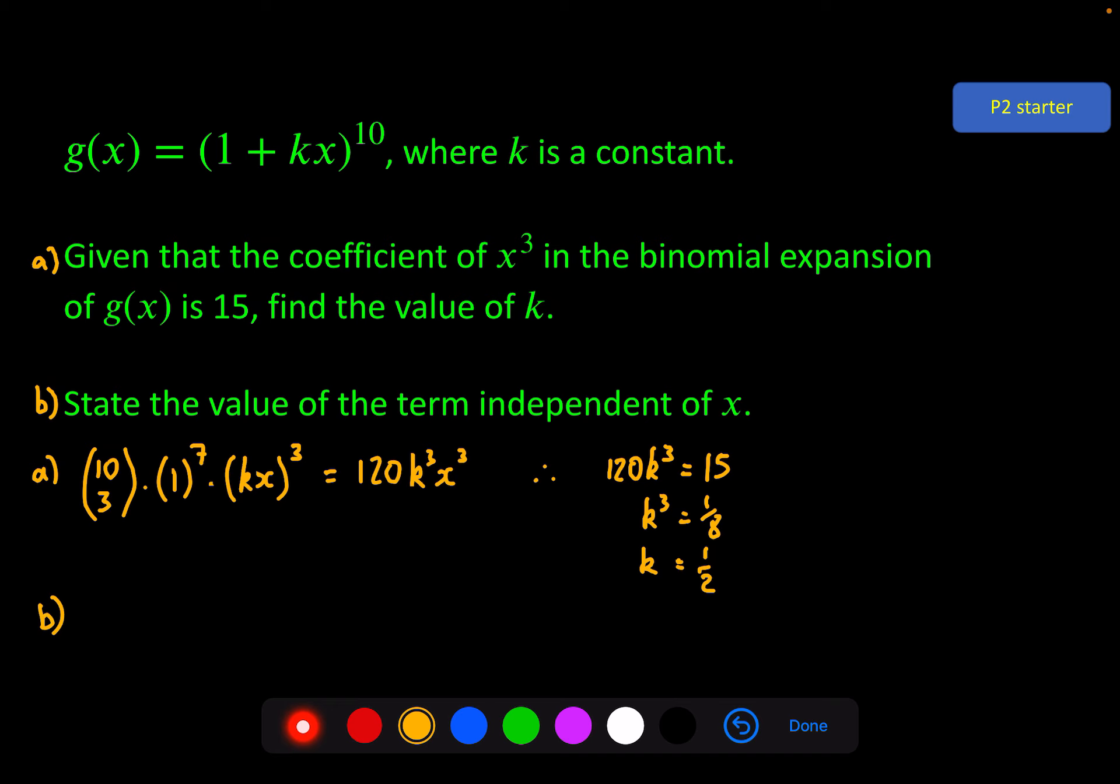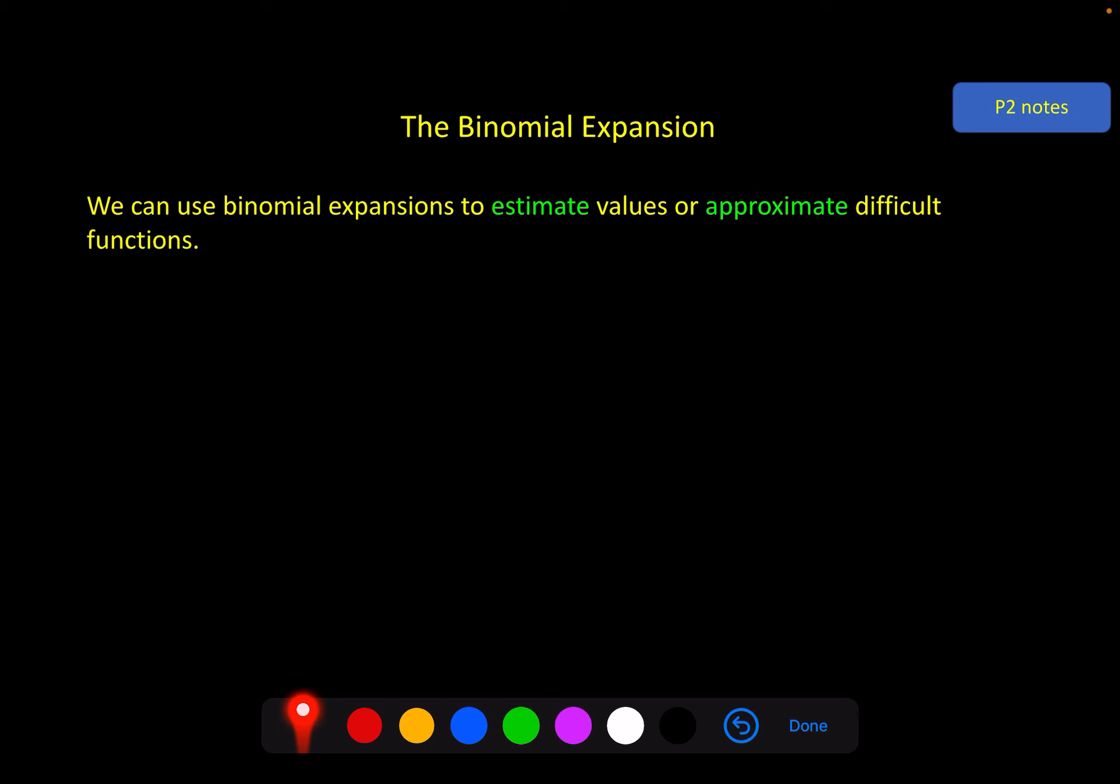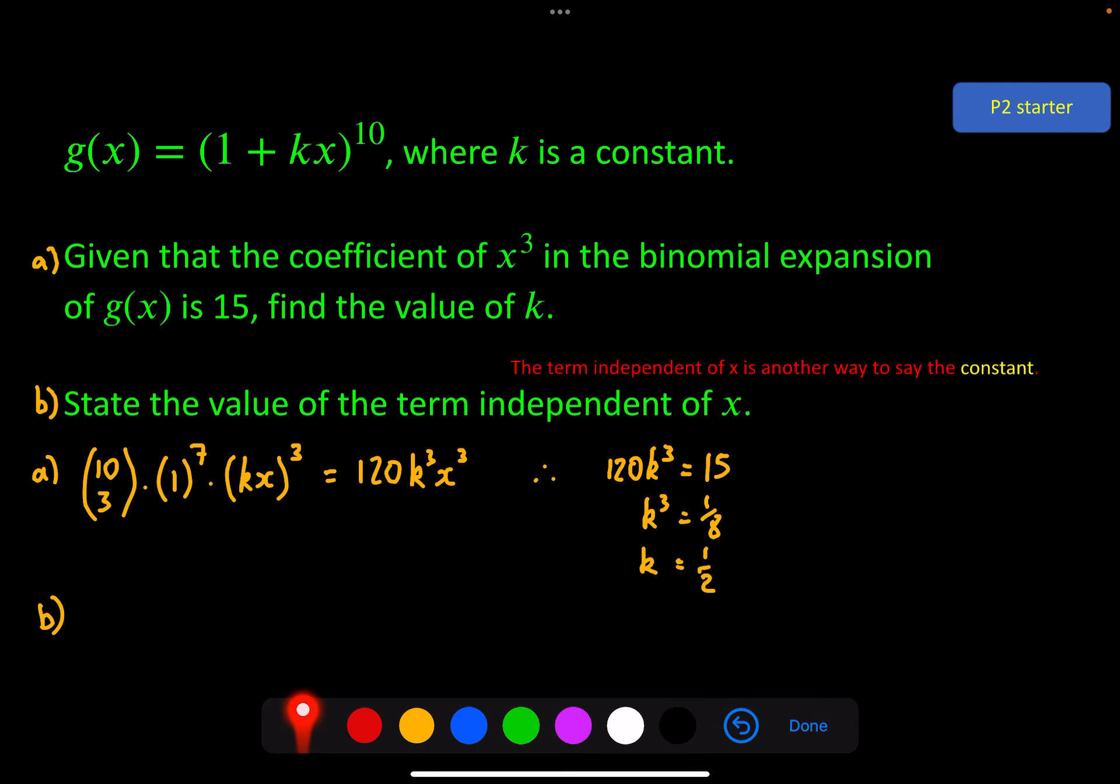Part b is a very quick and easy question in this case. The word 'state' should give you a clue how quick and easy this is. It doesn't say find or calculate or work out, just state it. And that's easy because the term independent of x is just another way to say the constant term. Now if the bracket was more complicated, if we had an x power 2 here and an x power minus 3 here, then you would have to figure out which one of the expansion terms will give you the constant. But in this case it's quite simple, it's just going to be the first one. And the first one is going to be 1 to the power of 10. 1^10 is just 1. So the constant in this case is simply 1.